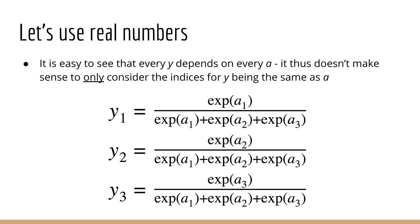It's easier to see if we draw a picture and use real numbers. Let's suppose we have three output activations, a1, a2, and a3. Then we have three corresponding output probabilities, y1, y2, and y3. We can calculate these probabilities using the softmax function. From this, it's easy to see that y1 depends not only on a1, but also a2 and a3. Similarly, y2 depends on all of the a's, as does y3.